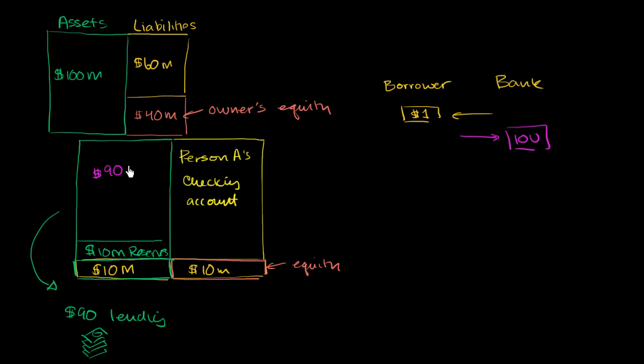So they're going to have 90 million of IOUs. We could say 90 million worth of loans. But you really could just view those as these are IOUs to other people. This is an asset because it's going to give some future benefit at some future time.